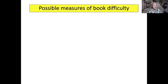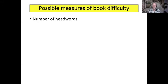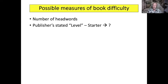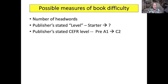Here are the various measures of book difficulty. Of course, there's the number of headwords, and then there's the publisher's stated level — starter, intermediate, and so forth. There's what I pronounce as CEFR, the Common European Framework of Reference, which publishers label from pre-A1 up to C2. There are very few C2 books, actually, because those people don't really need graded readers so much anymore, even though publishers make them sometimes.